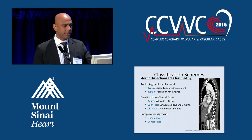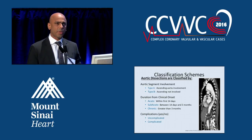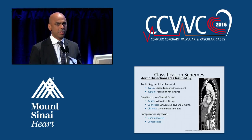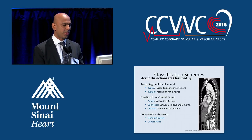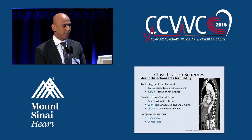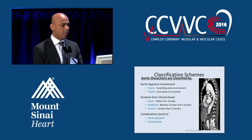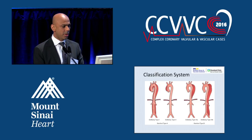When we're talking about a type B dissection, the ascending is not involved. There are timeframes we look at when treating them — we usually talk about treating within the acute and subacute phase, not the chronic phase. We get them within the first 14 days or within 14 days to three months. They can be complicated aortic dissections which warrant treatment, or uncomplicated, and we'll talk about indications for treatment for those.